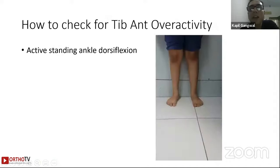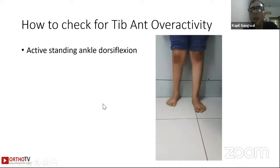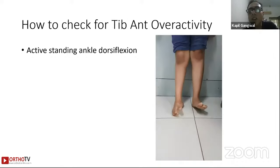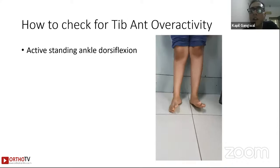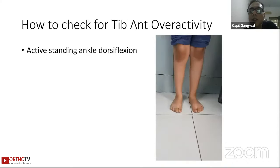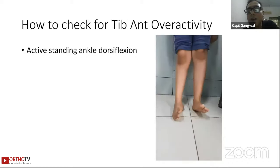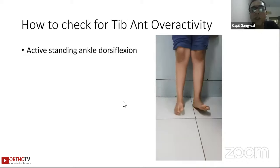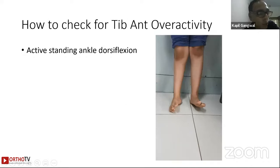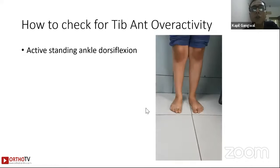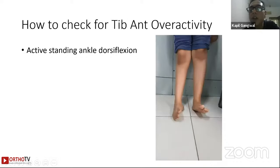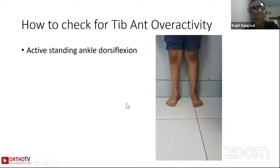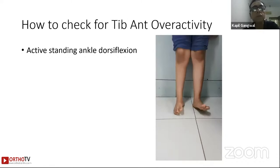How to check for tibialis anterior over-activity — this is the most challenging part of the examination. I ask the child to stand and lean against the wall, then dorsiflex the ankle. You can see that on the left side the foot comes up nicely, but on the affected right side they really invert and supinate it. This easy test helps distinguish which children have tibialis anterior causing the deformity in their gait.